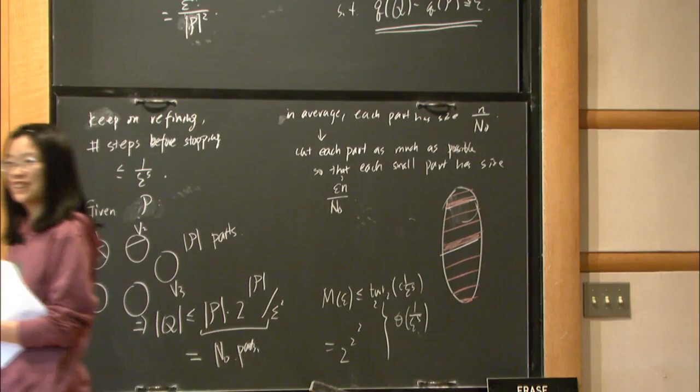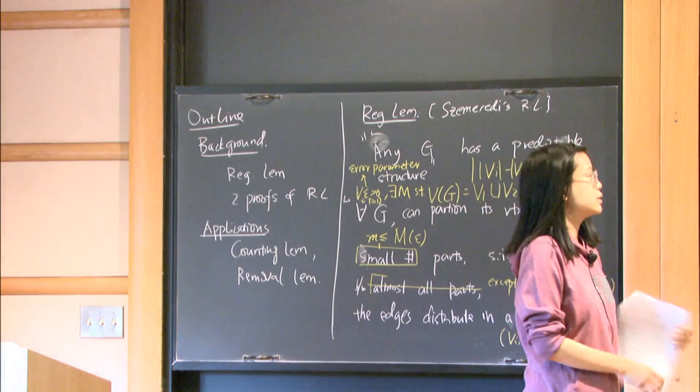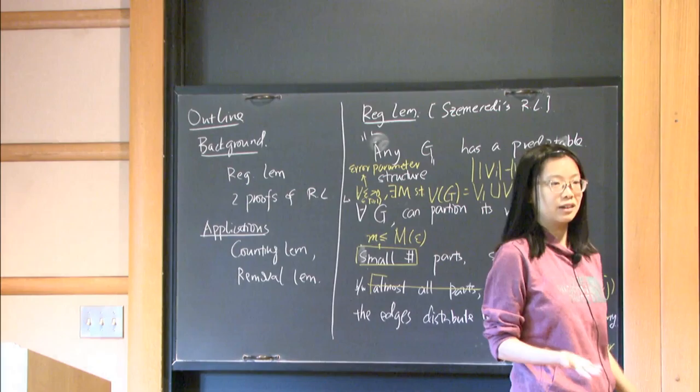There are other variants of the regularity lemma that give weaker conditions but much better bounds — only exponential rather than tower-type. This is called the weak regularity lemma, which will be discussed next week.